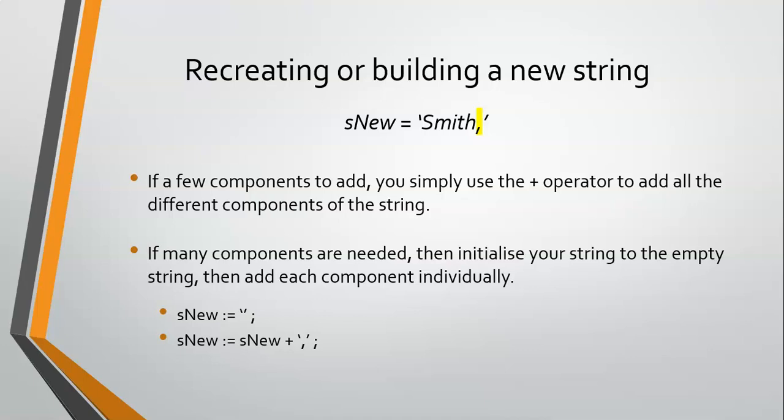This looks very familiar. When we sum everything in a loop, we say R-sum equals zero — we initialize it to zero — and then in the loop, R-sum equals R-sum plus the value we're adding. That's basically what we're doing here, except for strings. We're initializing S-new to the empty string, and then we take whatever's in S-new and add on what we want to add. For example, we can add on John — take whatever's in S-new, which was Smith with the comma, and add on the word John. And that's how you do the different techniques.